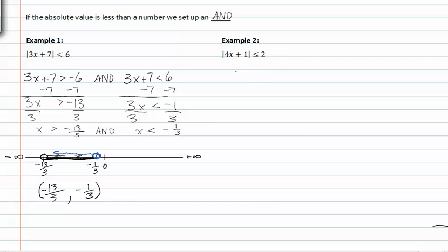In example two, we set up this inequality statement very similar to the previous one in example one. Four x plus one is greater than or equal to negative two, and four x plus one is less than or equal to two.